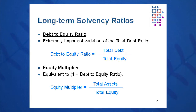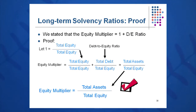The equity multiplier will be used again when we cover the DuPont identity later in this session, so remember it. The proof is that the equity multiplier — or assets-to-equity ratio — equals one plus the debt-to-equity ratio: equity over equity plus debt over equity equals one plus debt over equity, which is the same as assets to equity.